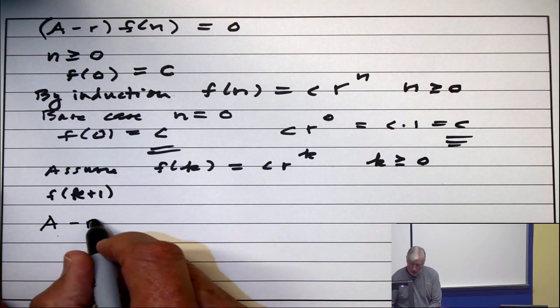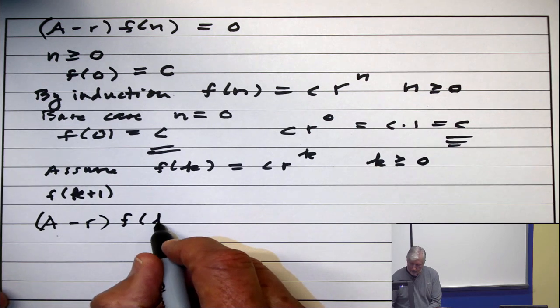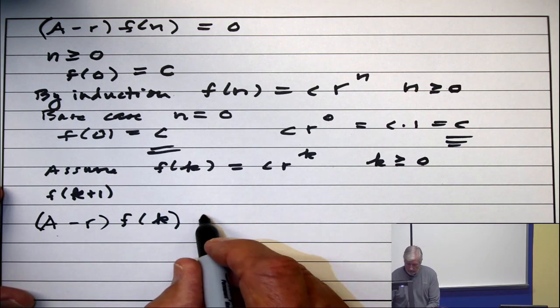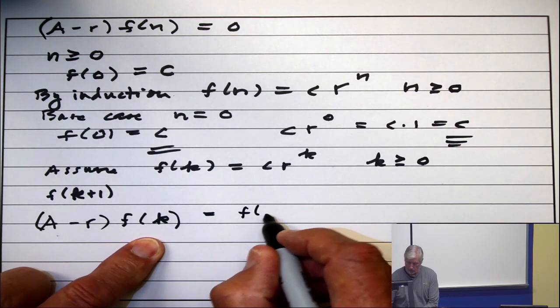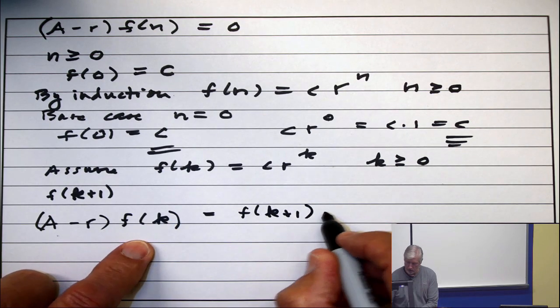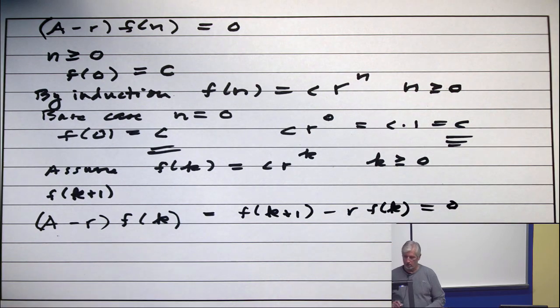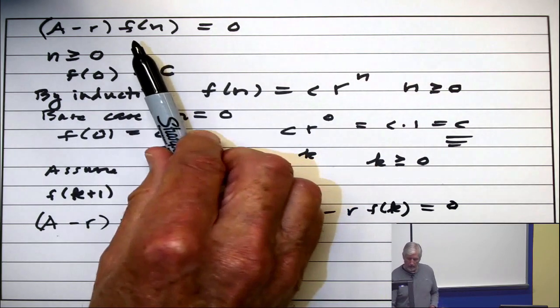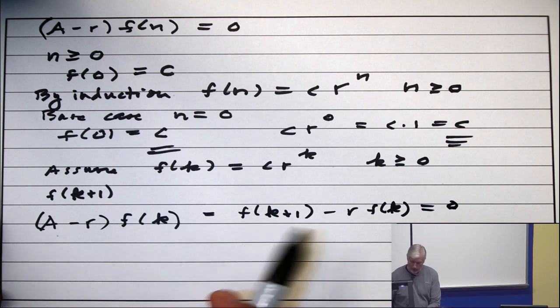(A - r)f(n) = 0. So what's (A - r)f(k)? The advancement operator on f(k) is f(k+1), and r times f(k) is just r·f(k). So that difference is 0.